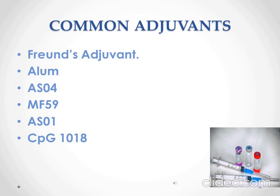MF59 is the adjuvant contained in an influenza vaccine licensed for adults aged 65 or older. It is an oil-in-water emulsion composed of squalene, a naturally occurring oil found in many plants and animal cells, as well as in humans. AS01 is made up of monophosphoryl lipid A, an immune-boosting substance isolated from the surface of bacteria. It is also a component of vaccines currently being tested in clinical trials, including malaria and HIV vaccines.